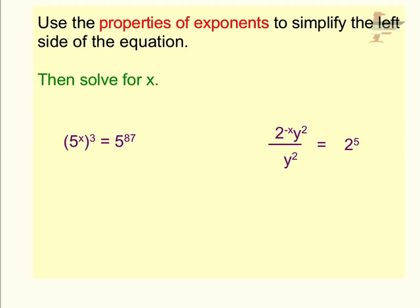We've made it to the last slide. Using your properties of exponents, we're going to simplify the left side of the equation, which will allow us to solve for x. We need to figure out what x equals so that the left side equals the right side. In this first example, we notice you have one base of 5 raised to the x power which is then raised to the third power, so our property tells us that we would multiply those two exponents. We're going to have 5 raised to the 3 times x power, which equals 5 to the 87th power.